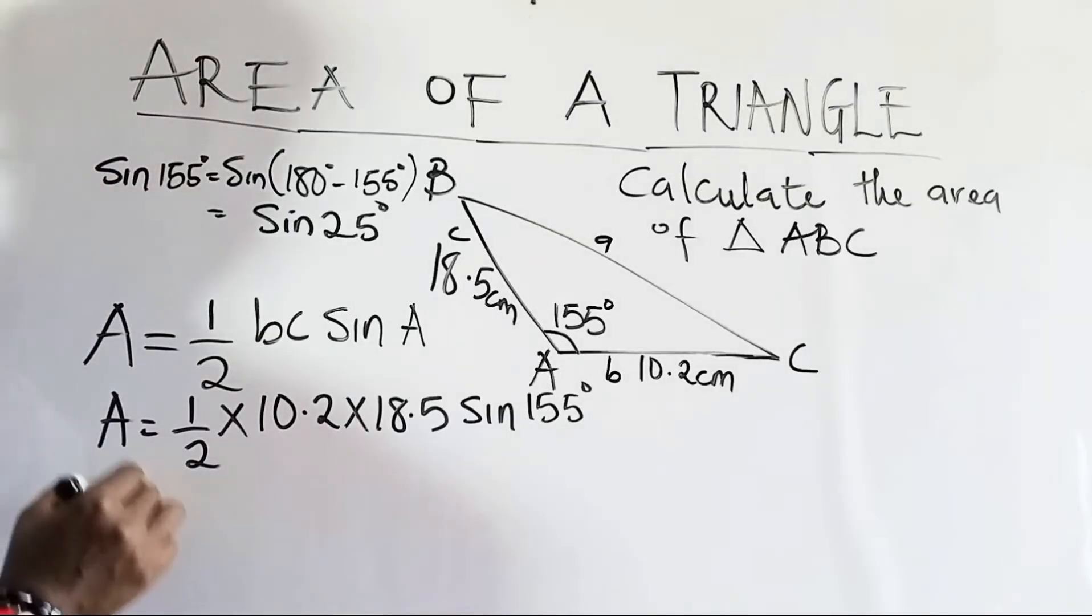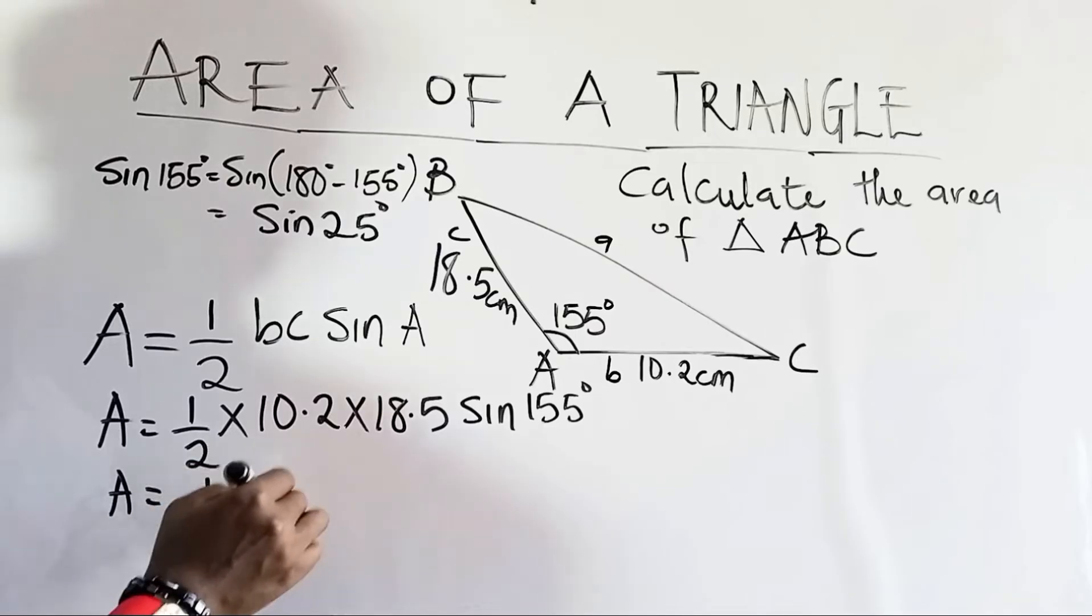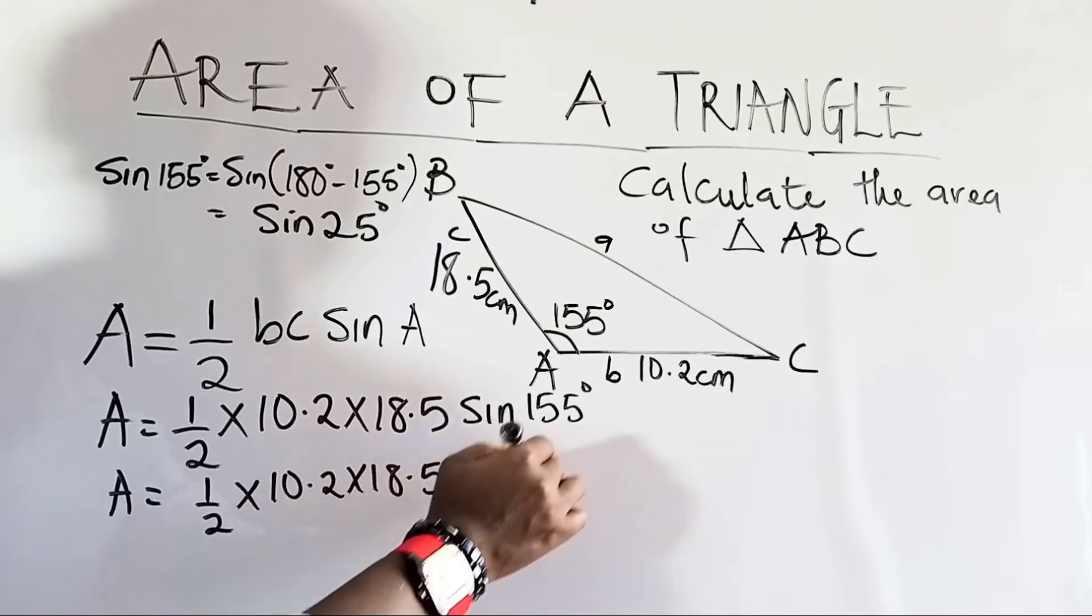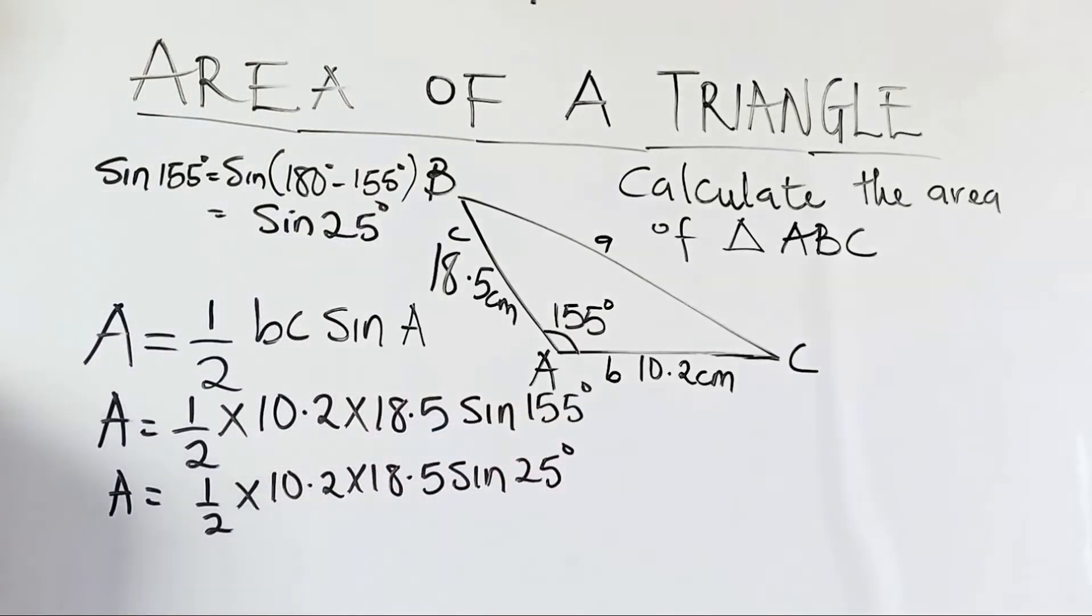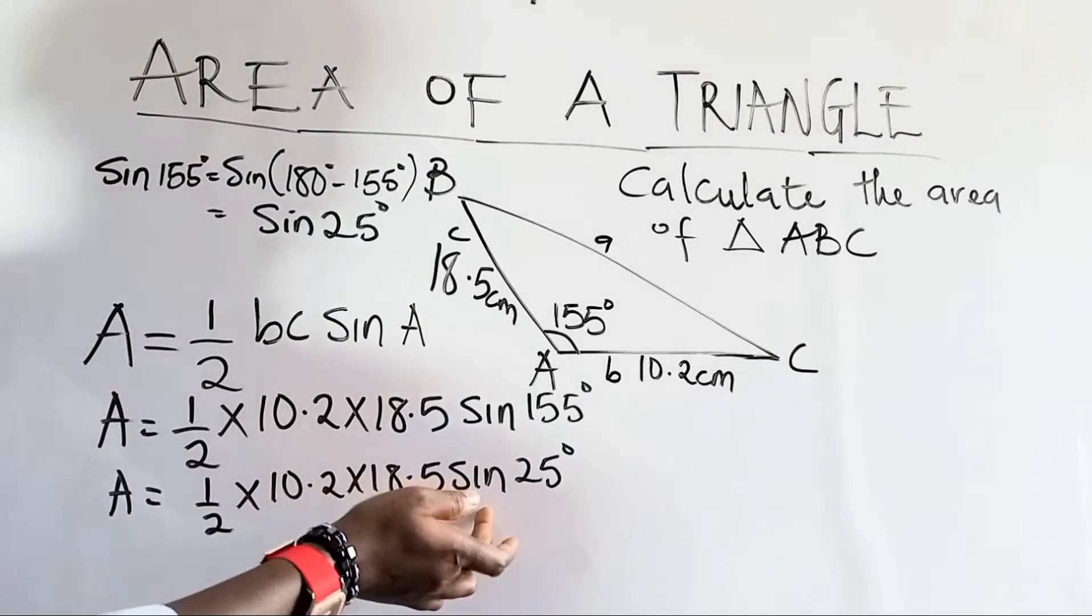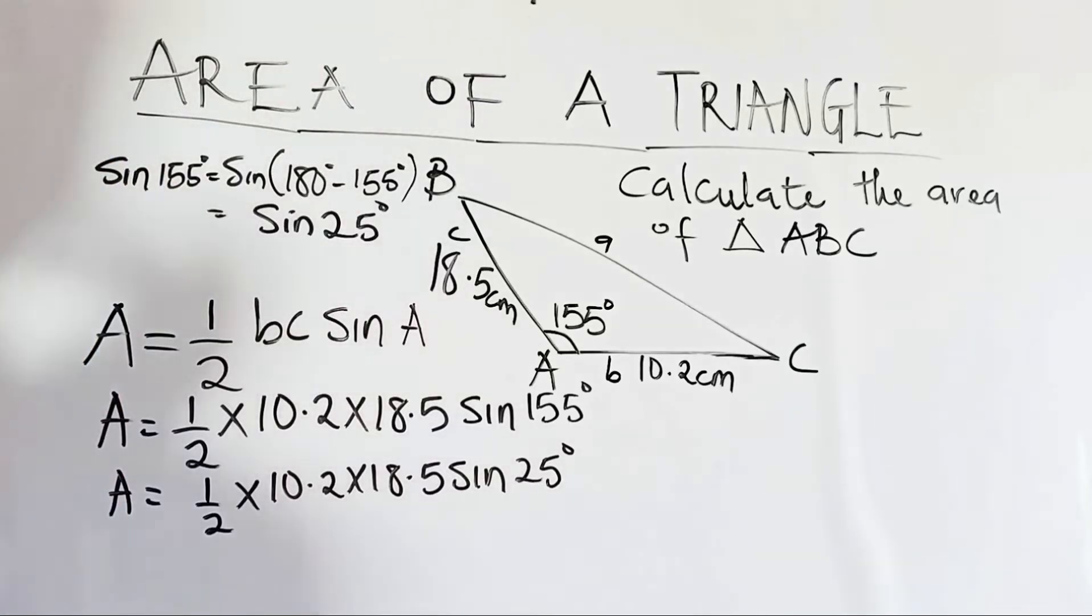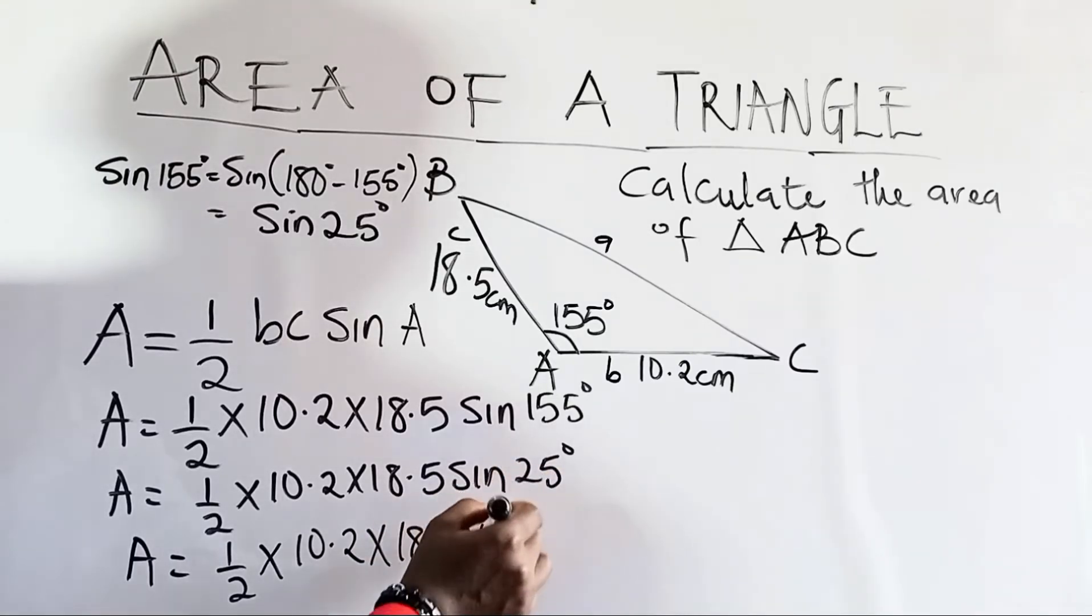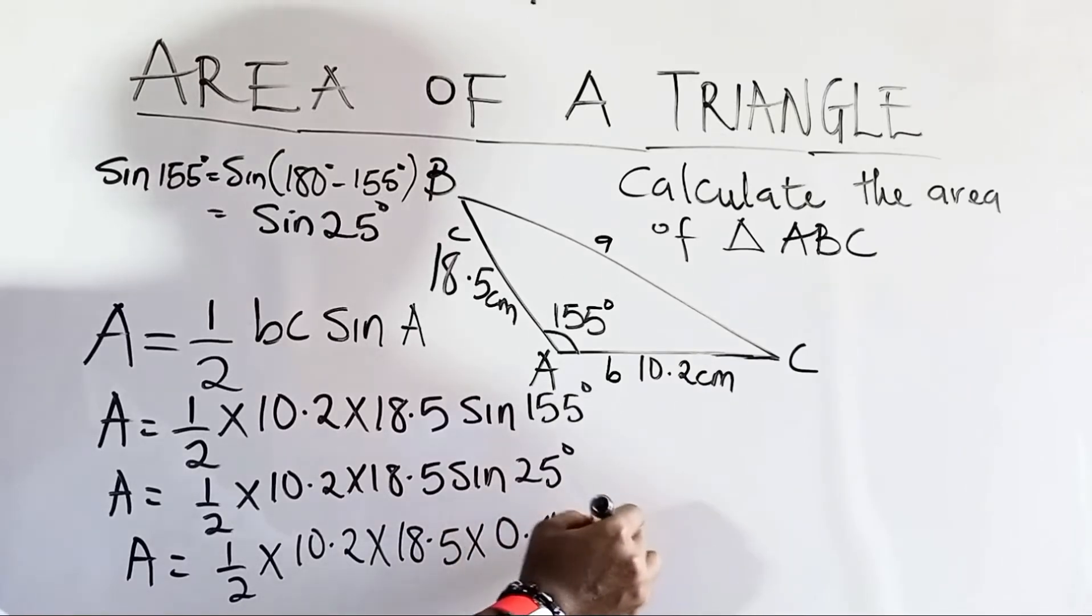So now, our area equals 1 over 2 times 10.2 times 18.5 sine 25 degrees. Now, the next thing we are going to do is to find the value of sine 25 using the sine table of values or sine 155 degrees using the calculator. I'm going to be using the table of values.